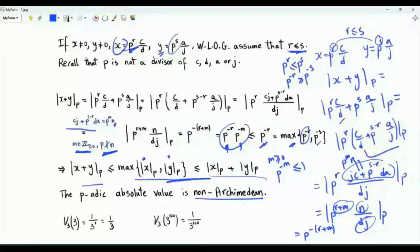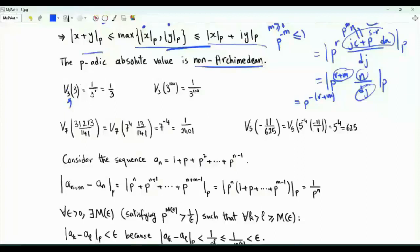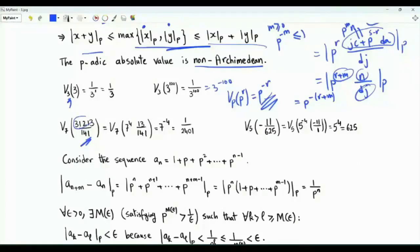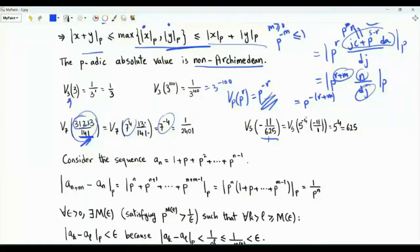This completes the verification that the p-adic absolute value is indeed an absolute value. For example, if p equals 3, the 3-adic absolute value of 3 is 1/3, and the 3-adic absolute value of 3^100 is 1/3^100. Generally, the p-adic absolute value of p^r is p^(−r): the number p^r grows exponentially with r, but its p-adic size is actually small. For the 7-adic absolute value of a rational number whose numerator is 7^4 · 13, the result is 7^(−4). For −11/625, since 625 = 5^4, the 5-adic absolute value is 5^4.